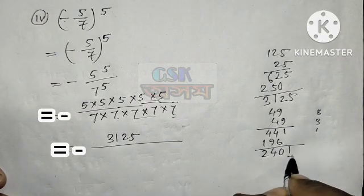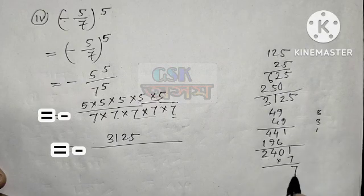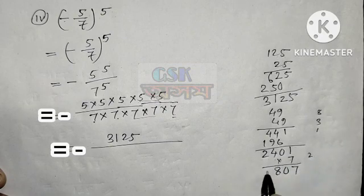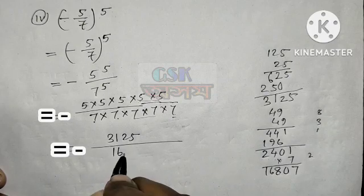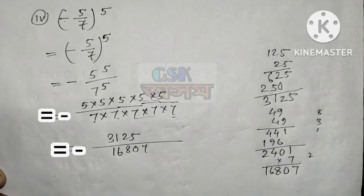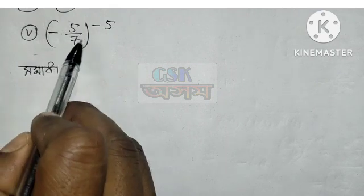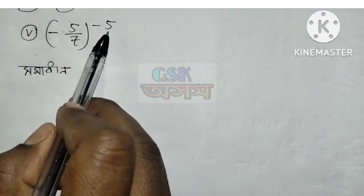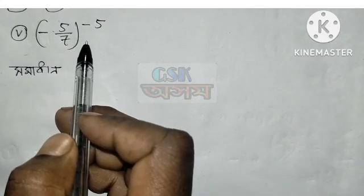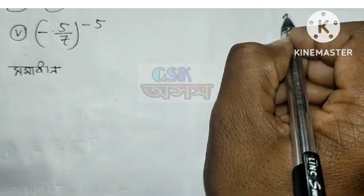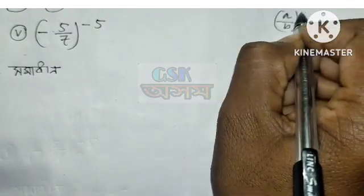This is the square root. We will do it. Question number 5 is minus 5 by 7 to the power minus 5. If we apply the rule, we let it equal to the power of n.